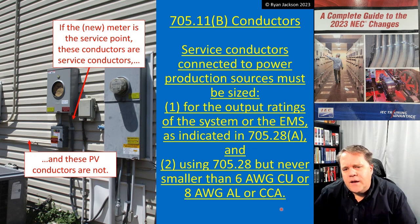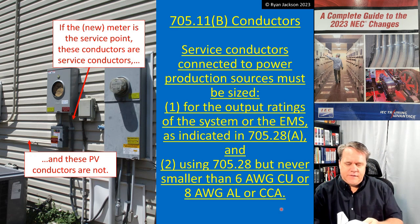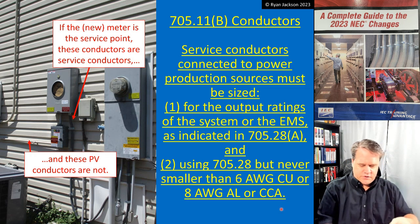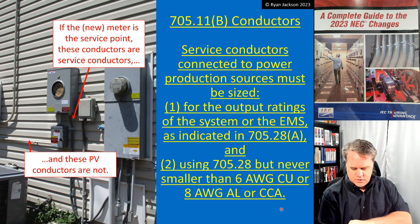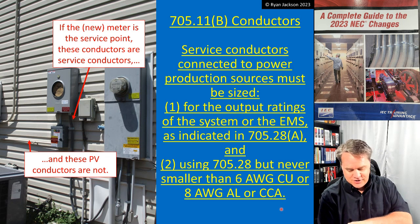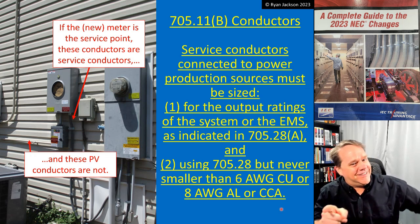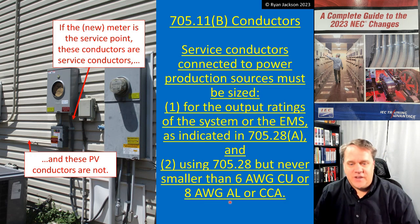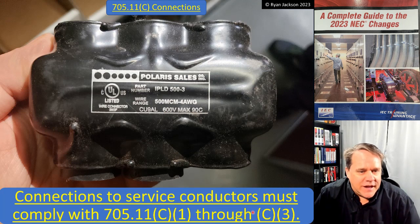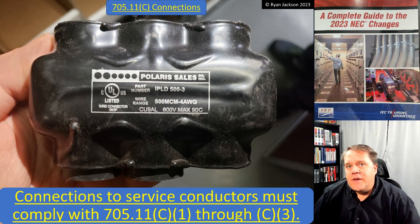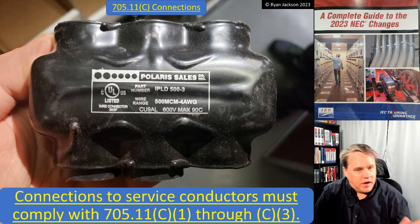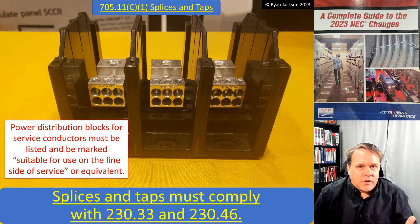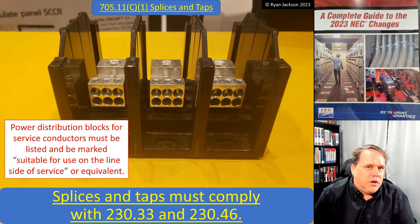Actually, that doesn't make sense. Let me check 705.11 — and we're going to keep this in the video to show I'm not a robot and I make mistakes. Yes: it's 6 AWG copper or 4 AWG aluminum or copper-clad aluminum. I had a typo there — my apologies. So 6 AWG copper or 4 AWG aluminum or copper-clad aluminum. Moving on: connections to service conductors must comply with 705.11(C)(1) through (C)(3), which defaults back to Article 230.